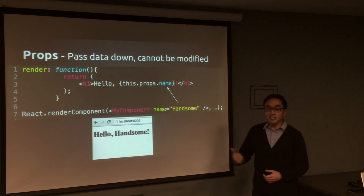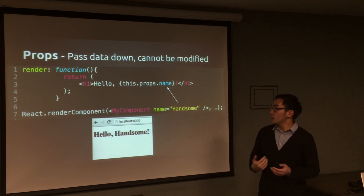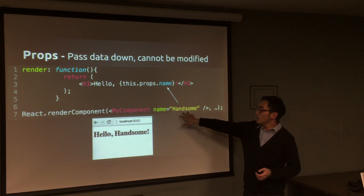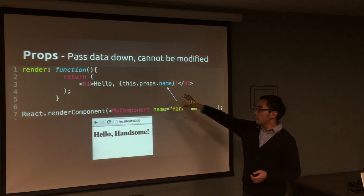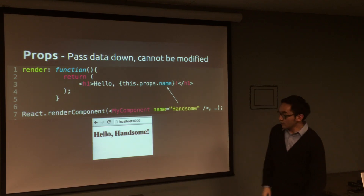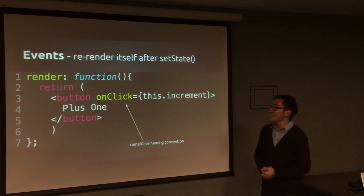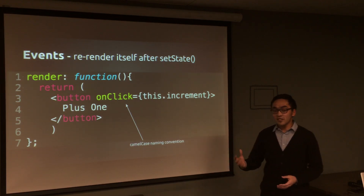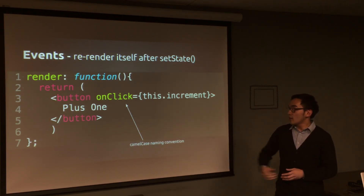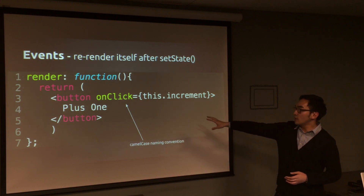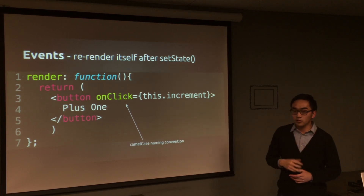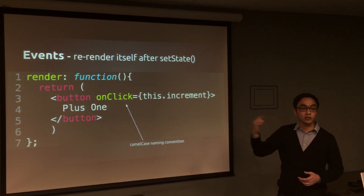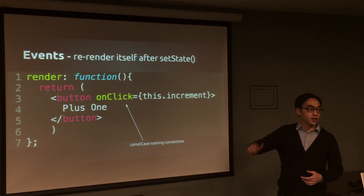Props are properties and are used for passing data down — they cannot be modified. Here's an example: you pass in a plain JavaScript object, pass it to defaultProps.name, and then it renders the name. In your component you can handle events like onClick. Once clicked, it calls a method — in this React component it's called 'increment' — which calls setState, and then re-renders the component.